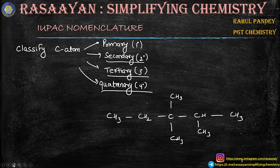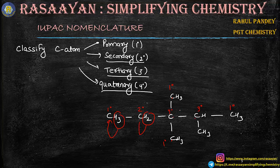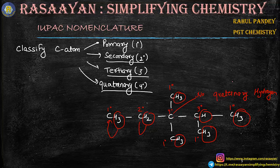I will be drawing a molecule so you can help me identify which carbon atom is 1°, 2°, 3°, or 4°. Look at this particular carbon atom — it is connected to only one carbon atom, so this is 1°. This carbon atom is attached to 1, 2, and 3 carbon atoms — this will be tertiary. This carbon atom is attached to 1, 2, 3, and 4 — so it is a 4° carbon atom. This carbon atom is attached to only 2 carbon atoms, so this is secondary. These remaining ones are again primary carbon atoms. Hydrogen attached to a primary carbon atom will be termed primary hydrogen; this is secondary hydrogen. Remember, there is no quaternary hydrogen — keep this in mind.